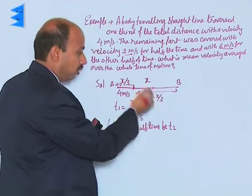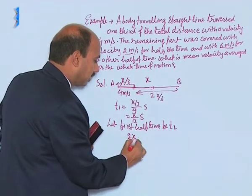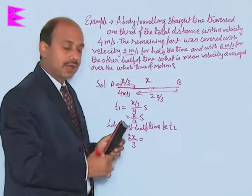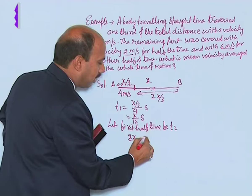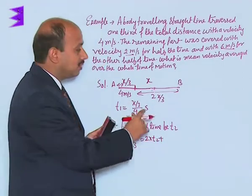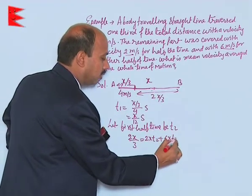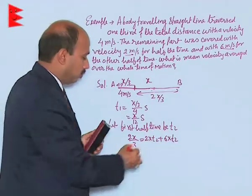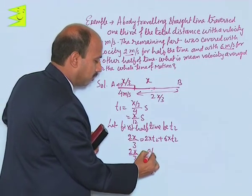So you will be writing here 2x upon 3. This is the total distance traveled, and then you can take distance traveled in the first half is 2 into t2, plus distance traveled in the second half of the time, we can take 6 into t2. So you will be getting 2x upon 3 is equal to 8t2.